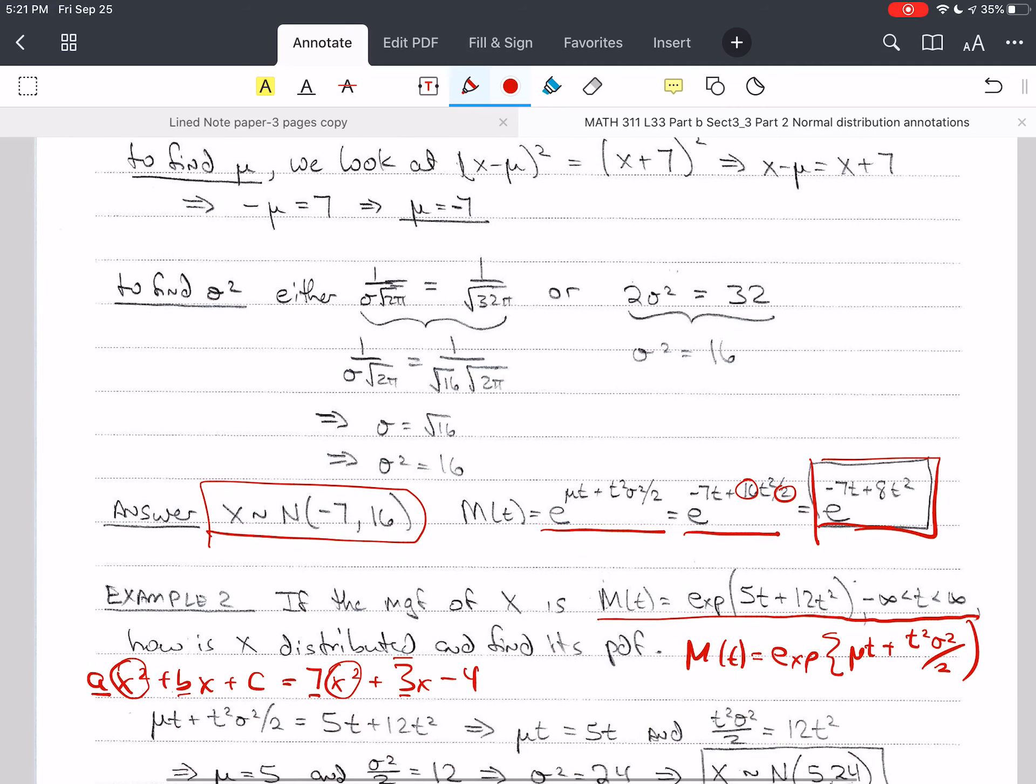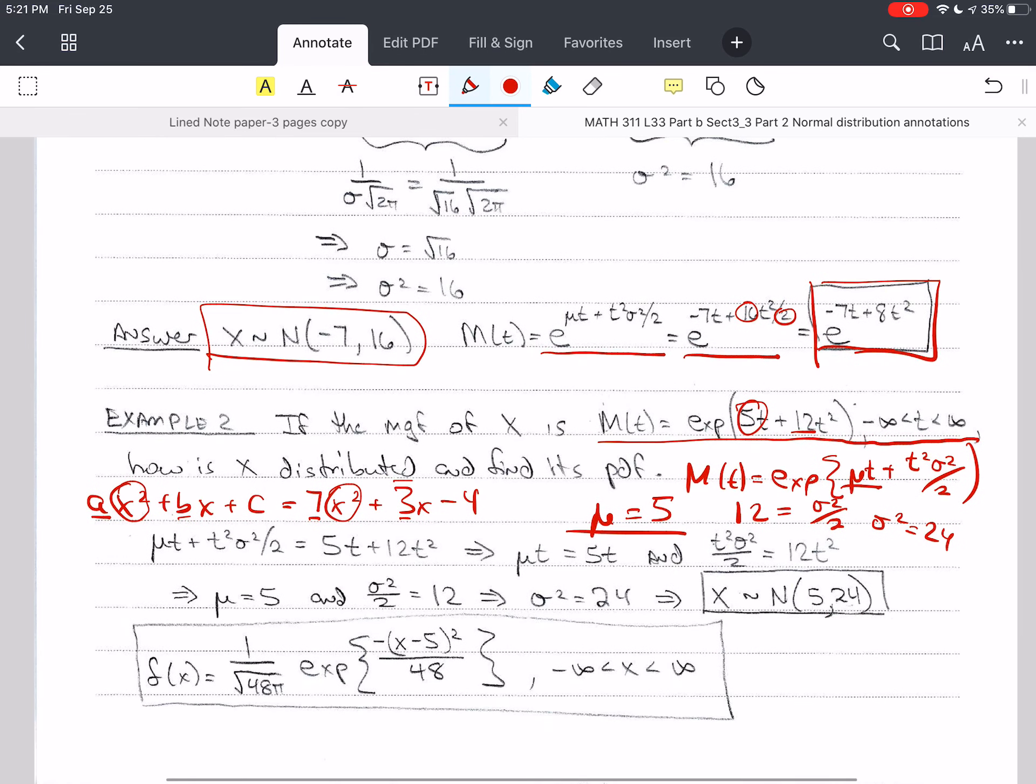So that's what I'm going to do here. I've got mu t. So I'm looking at the coefficient for t is going to be mu for this. So I've got mu equals 5. And then for t squared, I've got 12 equals sigma squared over 2 by this theorem. And so that means that sigma squared equals 24. And so I know that x is a normal with 5, 24. 5 is the mean, 24 is the variance. I plug that in.